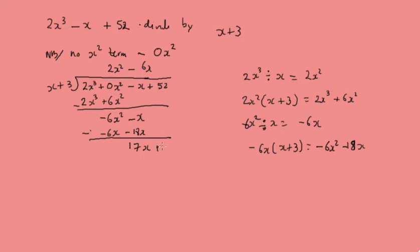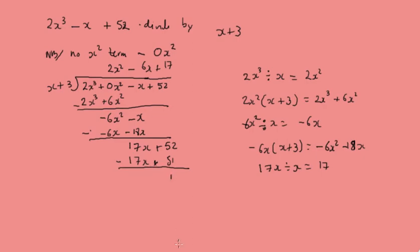Now we take 17x and divide it by x, which gives us 17, so we put plus 17 in the quotient. Then 17 multiplied by x plus 3 gives 17x plus 51. We write that below and subtract. Those terms cancel and we have a remainder of 1.